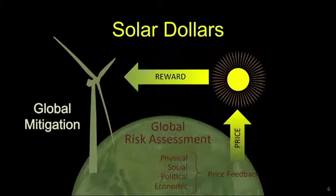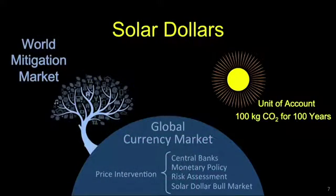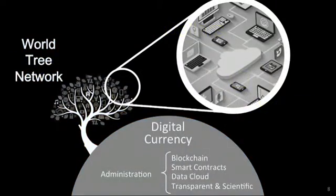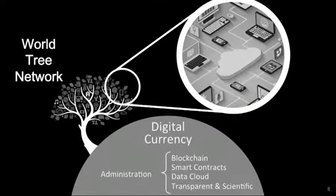The solar dollar will be issued as a mitigation reward — the missing complement to carbon taxes and cap and trade. The solar dollar price will be defined by global risk assessments. It will be a world currency and a reward for verifiable mitigation, with the price managed by central banks in foreign exchange currency markets. The solar dollar will be a hybrid of a digital blockchain, a carbon offset, a smart contract, and a reserve currency.